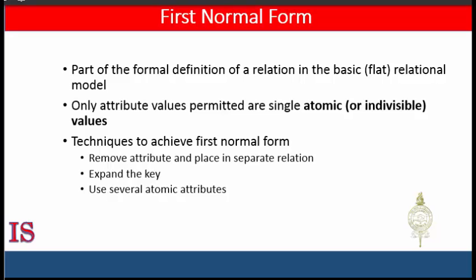Atomic values are simple and indivisible. It also states that any value of an attribute in a tuple must be a single value from the domain of that attribute. Therefore, first normal form disallows having a set of values, a tuple of values, or a combination of both as an attribute value — in other words, relations within relations or relations as attribute values within tuples.